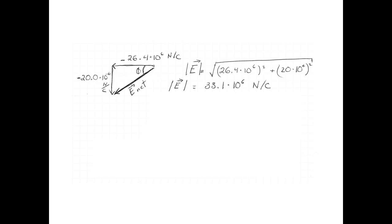The direction is going to be a little bit trickier. The direction of the vector is 180 degrees plus the angle phi on my picture. That's because you see the vector is to the left and down, so it's in the third quadrant. So 180 degrees plus the inverse tan of 20 divided by 26.4 is 217 degrees. And that makes the answer 33.1 times 10 to the power of 6 newtons per coulomb at 217 degrees.